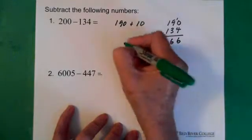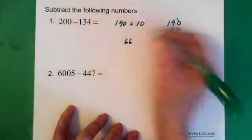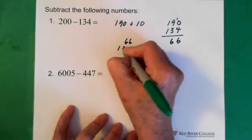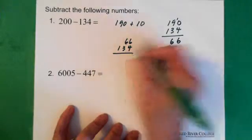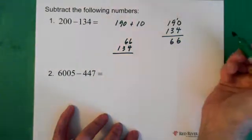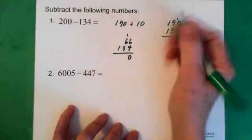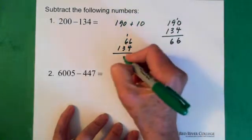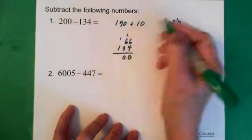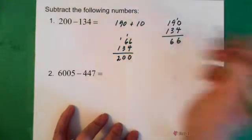And if we're thinking, oh, I'm not sure, we just add it up. 66 plus 134. 6 and 4 is 10, 0 carry the 1. Here we have 10 again, 0 carry the 1. And this becomes a 2. So we're good.